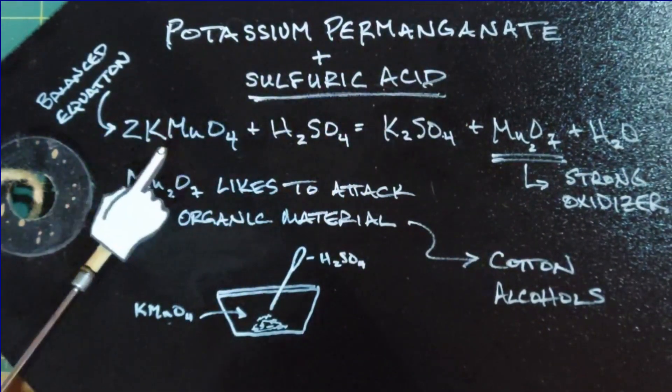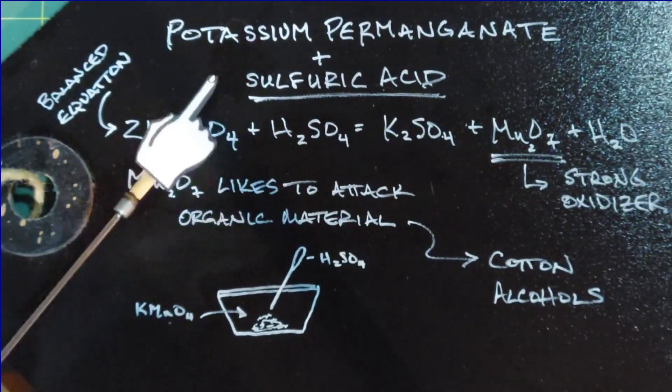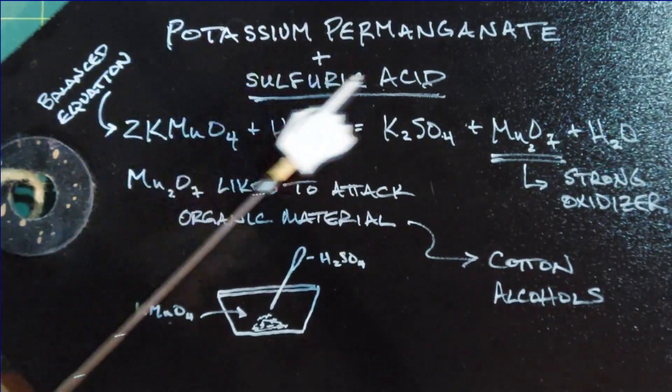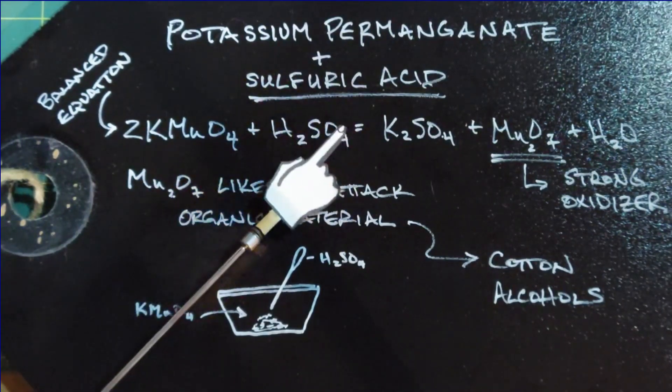Potassium permanganate is KMnO4, so it's potassium, manganese, and O4, which is oxygen. And then sulfuric acid here, which is H2SO4, hydrogen, sulfur, oxygen.